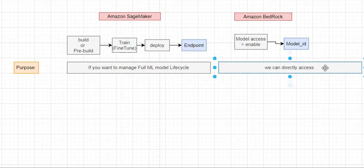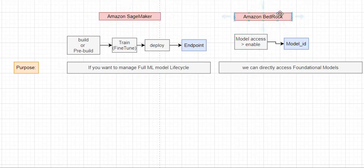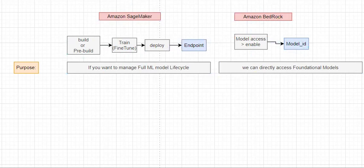In Bedrock, we can directly access already-available foundational models. We don't need to pre-train them. We simply need to access them by their model IDs. So, when do we use Bedrock compared to SageMaker? If you don't want to manage your model-related lifecycle — if you don't want to build, pre-train, or deploy any model — then you simply copy the model ID, enable that model, and directly use that foundational model in your application code.